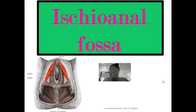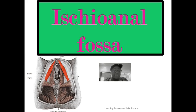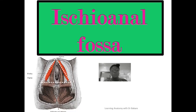Welcome back to the channel. In this lecture I'll be looking at the ischioanal fossa. Using the image by the side, the perineum is subdivided into two triangles: the anteriorly placed urogenital triangle, highlighted in dotted white, and the posteriorly placed anal triangle, also highlighted here in dotted white.